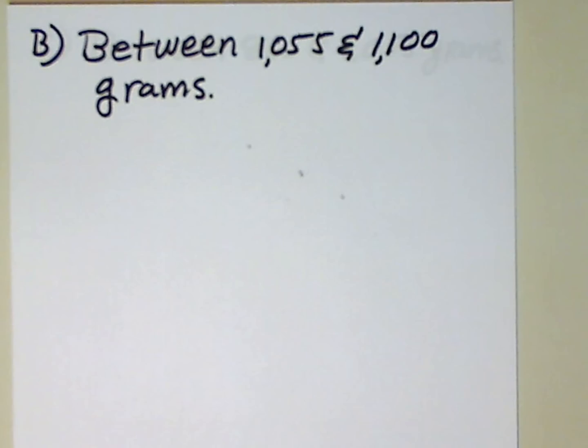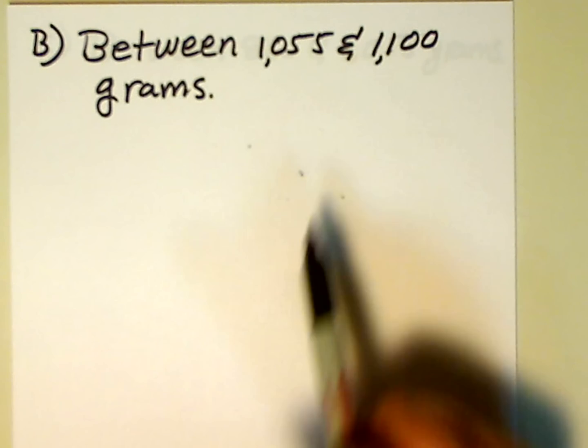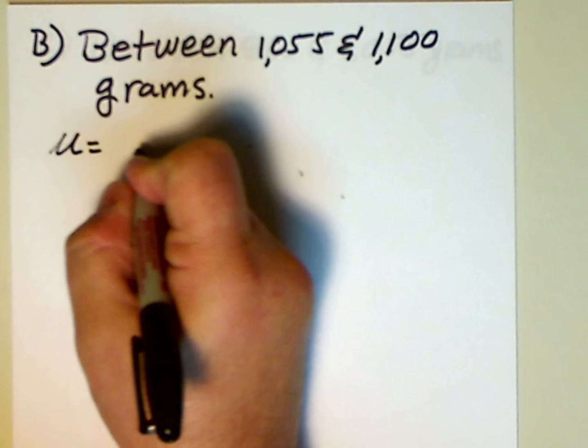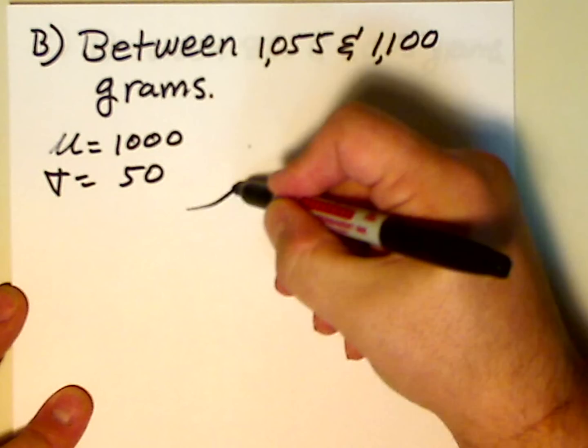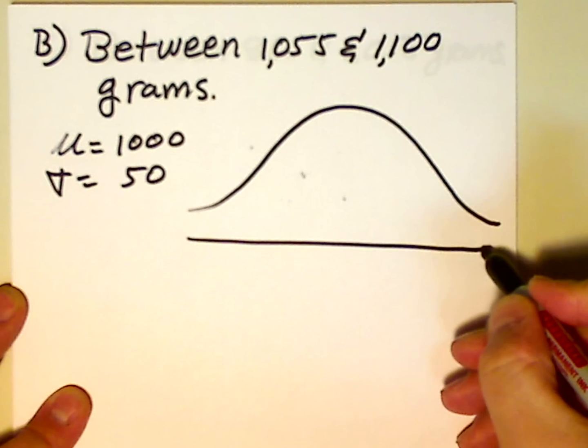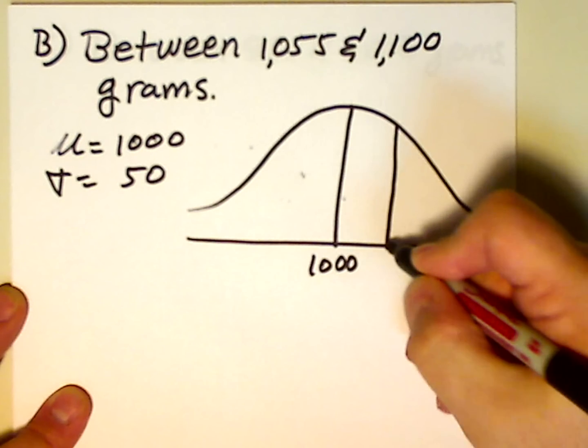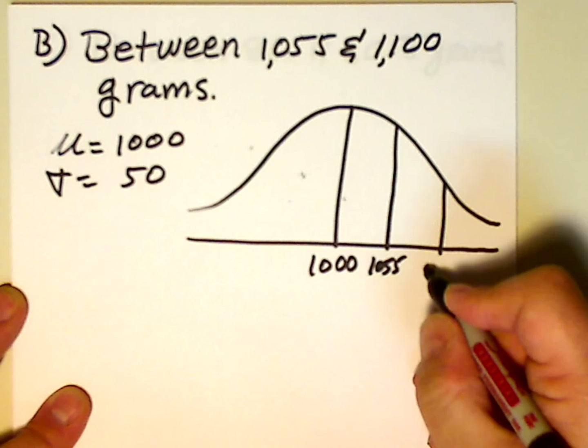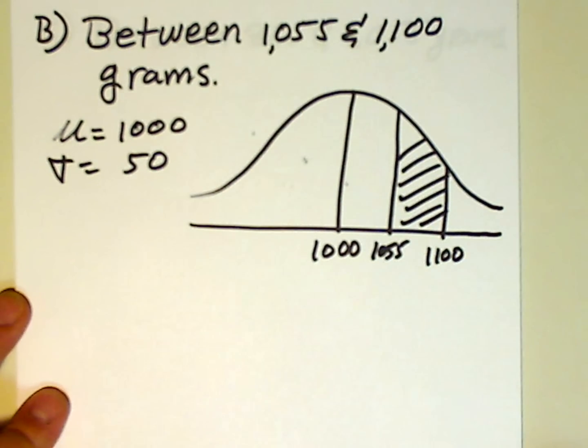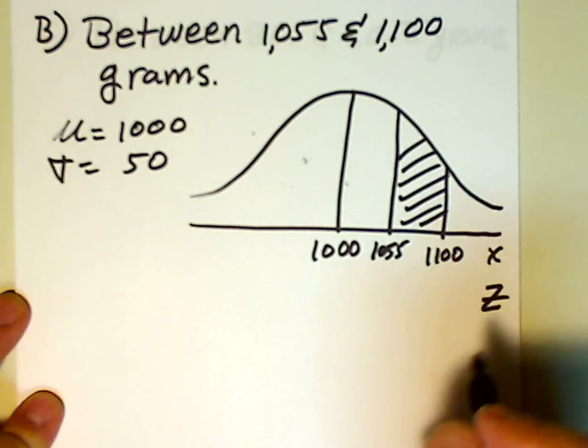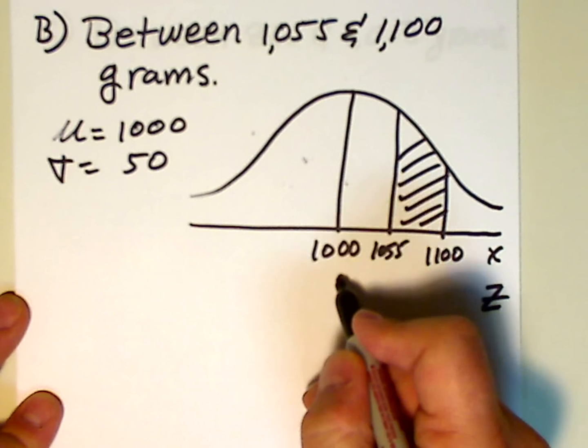So, let's look at part B to this question. Part B asks what the probability is that the weight will be between 1,055 and 1,100 grams. So, we know that the mean mu is 1,000, and sigma, the standard deviation, is 50. Let's draw a fairly big curve here. We know that the mean is 1,000, and we're interested in the area from 1,055 to 1,100. We're interested in this area right here. So, in order to do that, we're going to convert our x-values to z-values and use the standard normal distribution.